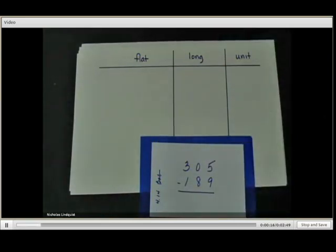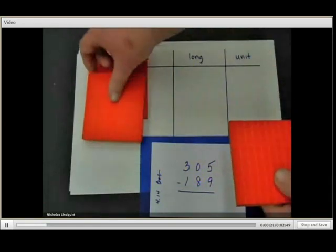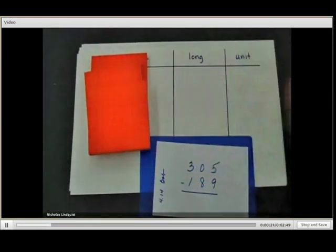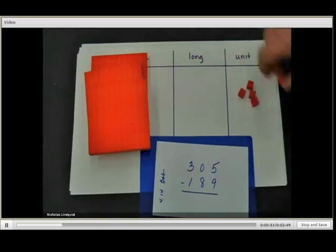First I need three flats. That would be one, two, three. I have no longs, so we'll leave that empty. But then I need five units. That's one, two, three, four, and five.